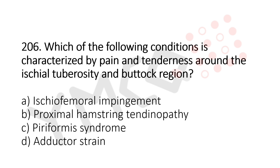Question 206: Which of the following conditions is characterized by pain and tenderness around the ischial tuberosity and buttock region? Option A: ischiofemoral impingement. Option B: proximal hamstring tendinopathy. Option C: piriformis syndrome. Option D: adductor strain. The answer is option C, piriformis syndrome.